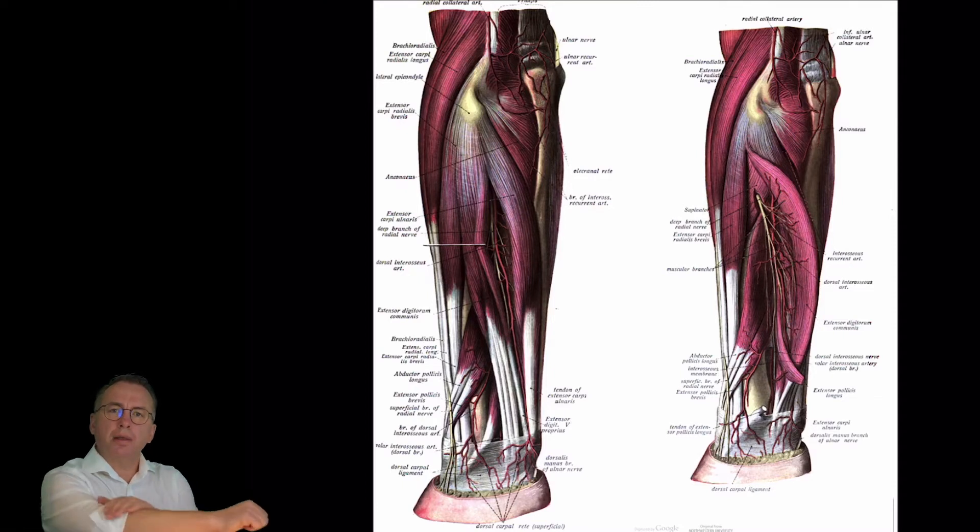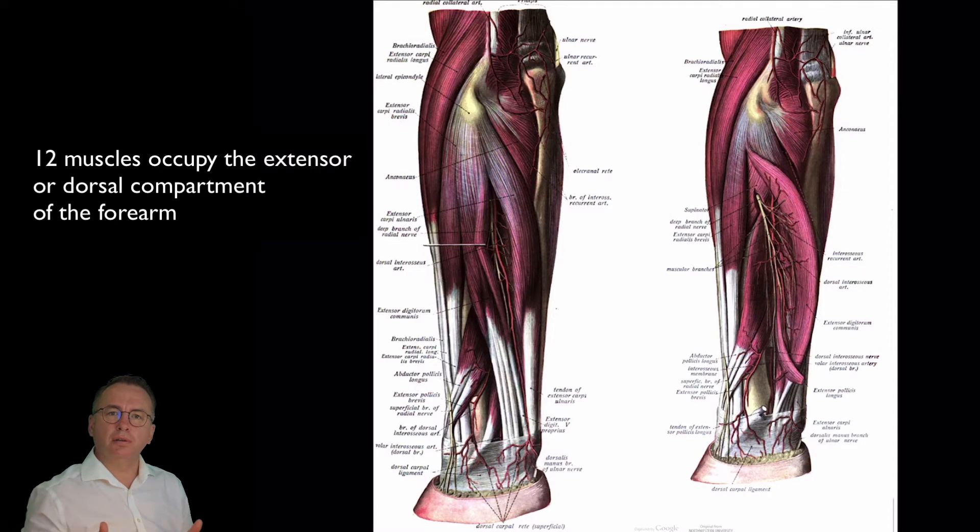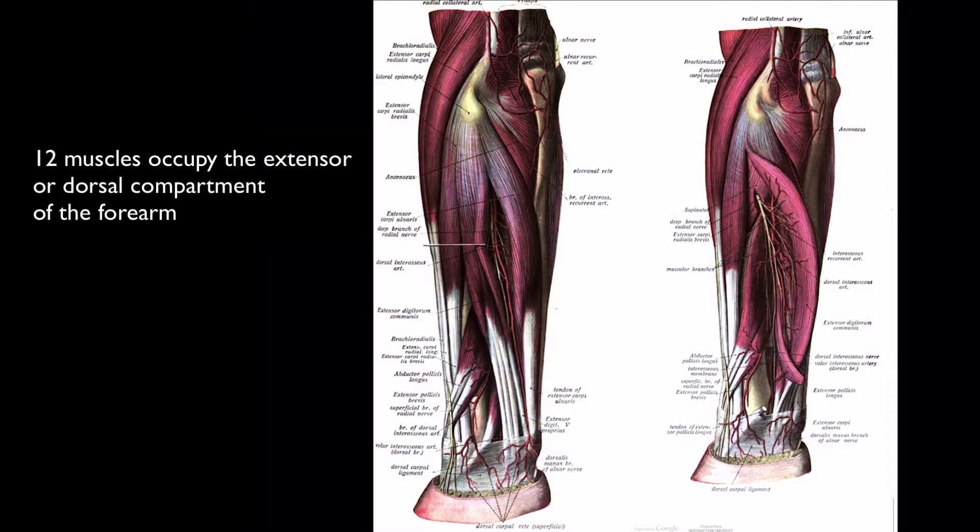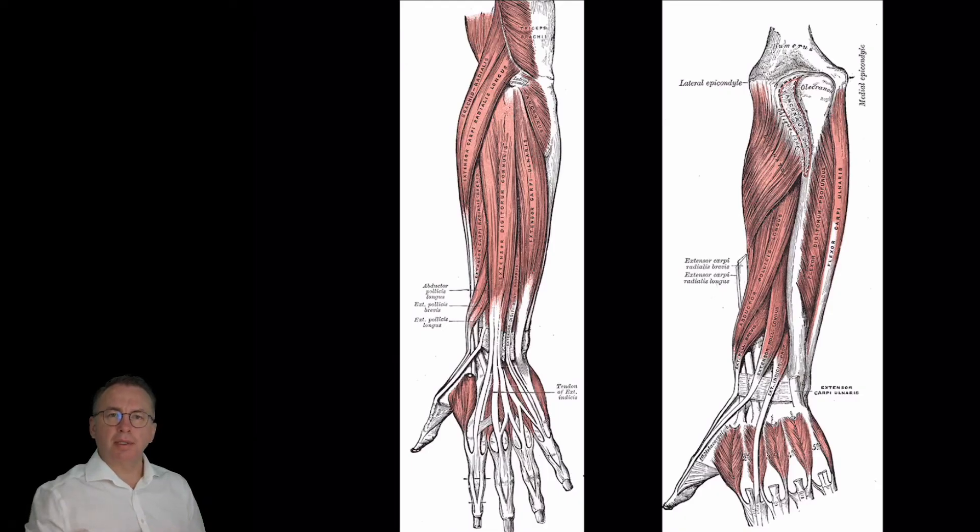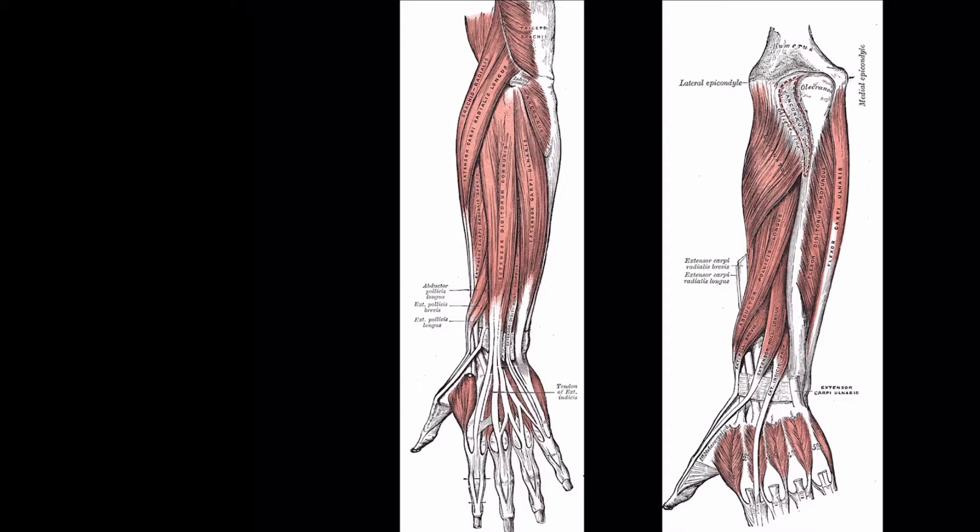As I said, the extensor tendons occupy the dorsal posterior compartment of the forearm and there are 12 of them. This diagram here shows us very grossly the muscles from a superficial perspective and reflected some of that deeper musculature. This more diagrammatic representation shows the muscles a lot clearer. We can see a lot of them all arise from the same area around the lateral elbow and all pass distally in the forearm across the wrist here.